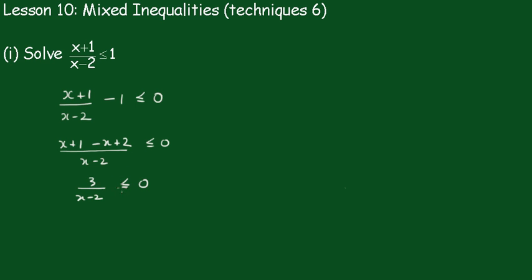Now 3 is always positive, so to make this one negative, (x-2) must be less than 0, less than 0 and not equal to 0 again. Therefore, x is less than 2 is the solution to this one.